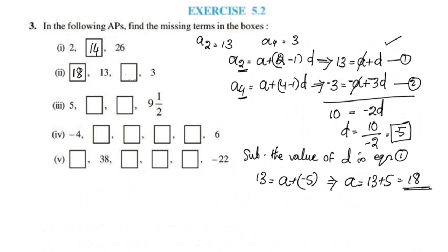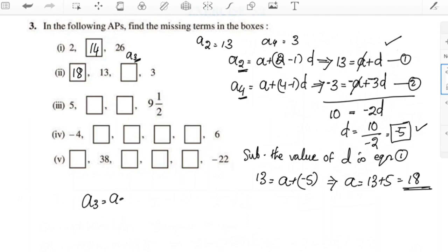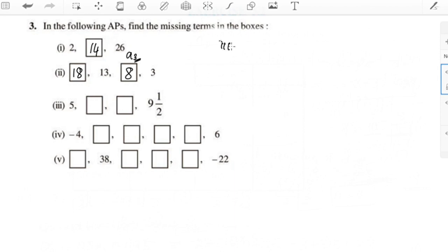For the third question, we have A1 = 5 and A4 = 9 and 1/2, which is a mixed fraction equal to 19/2.